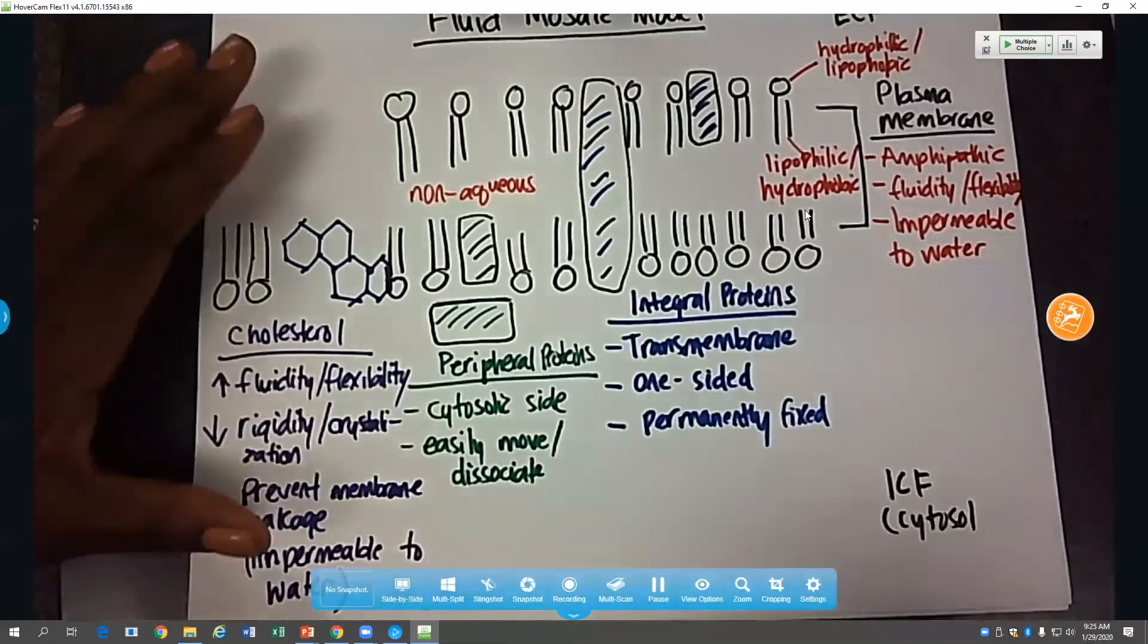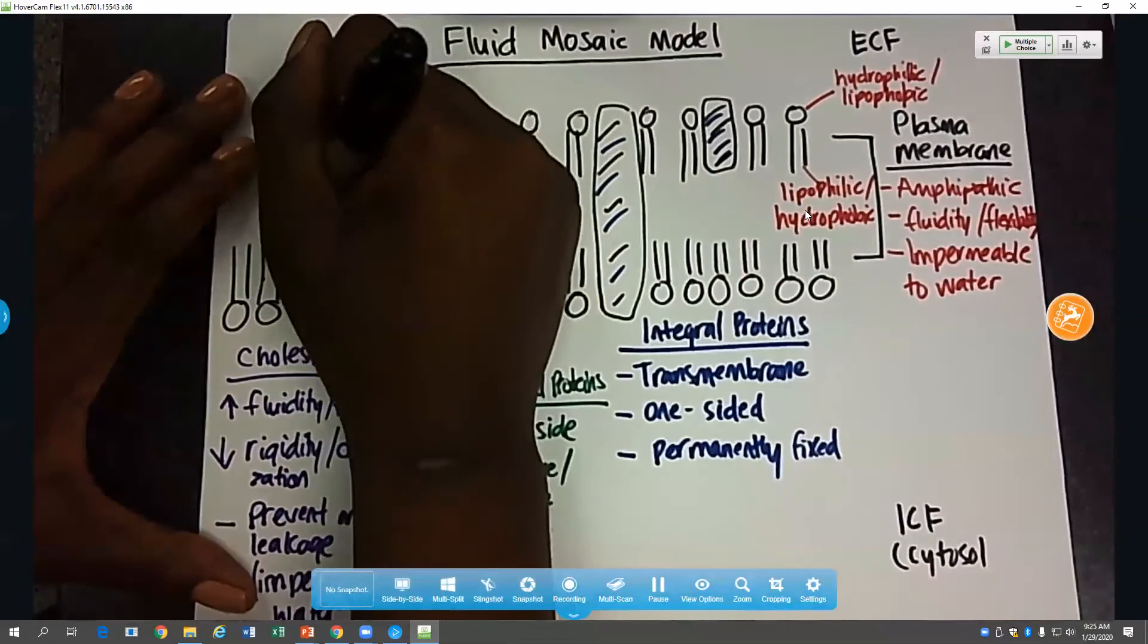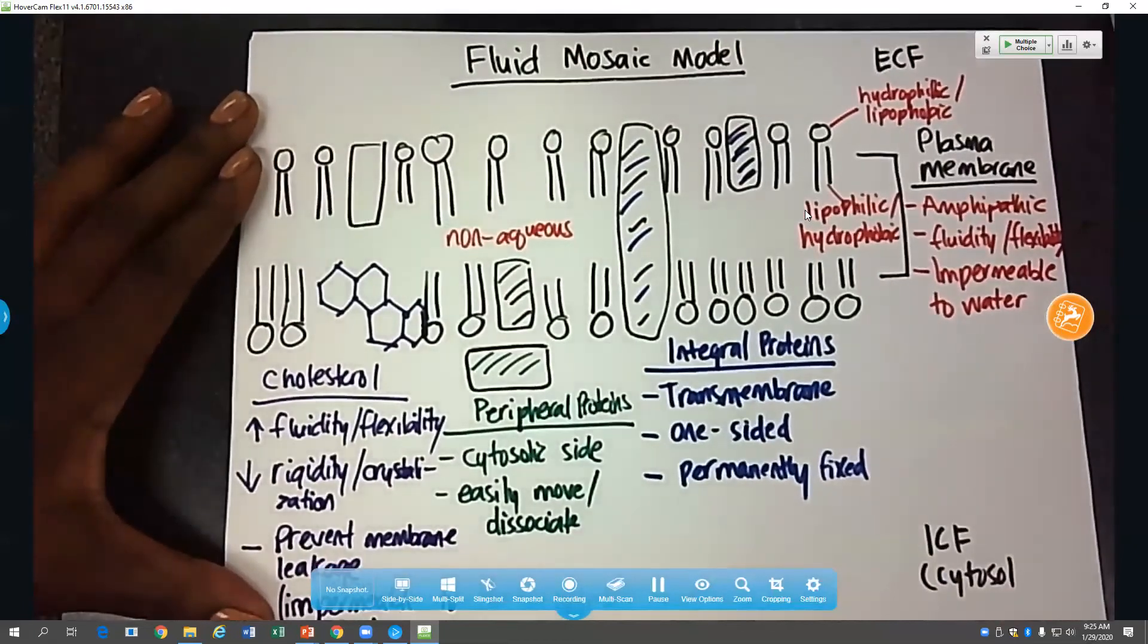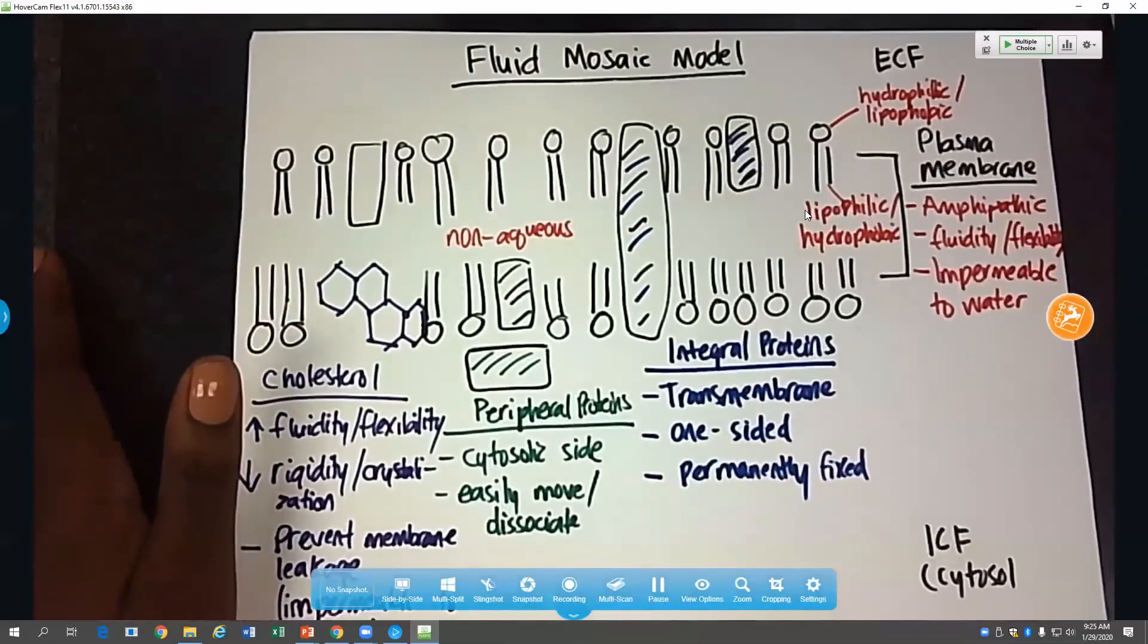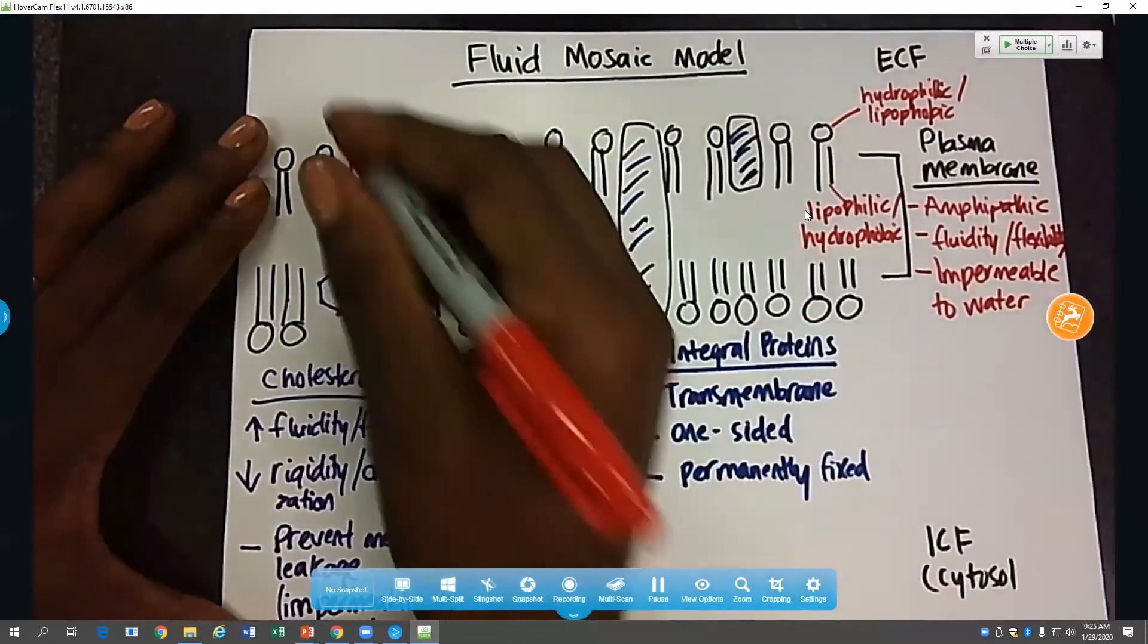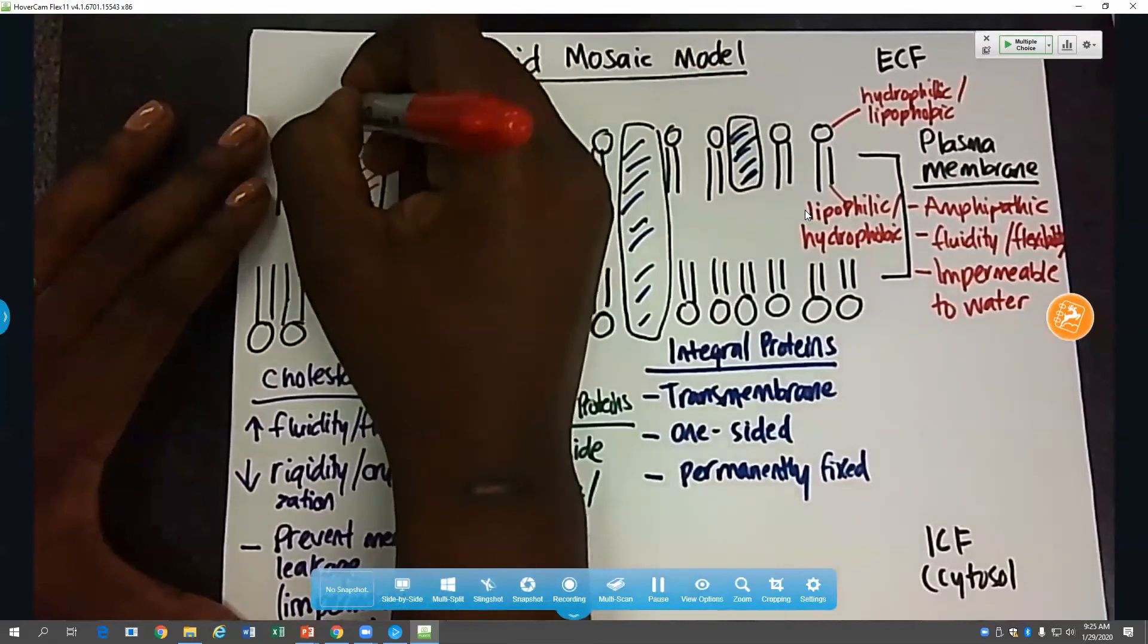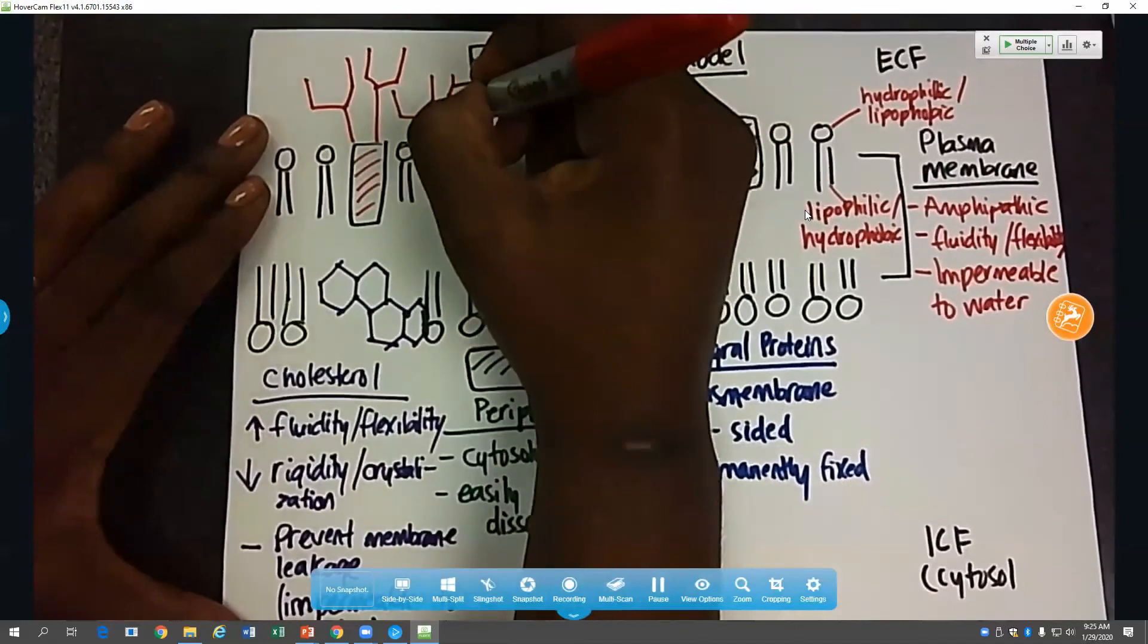Now the last class of molecules we'll look at in the cell membrane are carbohydrates. And carbohydrates are basically these glucose branches that exist either on fats or on proteins. So they can be on fats, which are our phospholipids. We can have some carbs branching off here. Or they can be on proteins. So when they're on fats, we call them glycolipids.